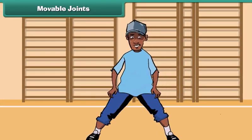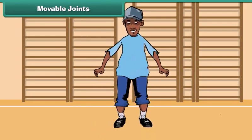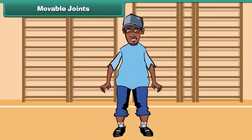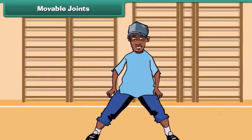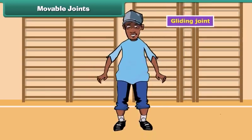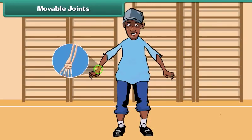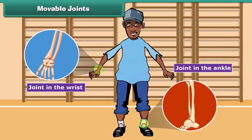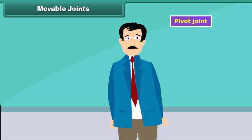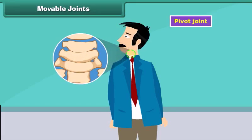Friends, have you ever noticed that we can move our hands and feet in different ways? The joints which allow such movements are called gliding joints. Joints in the wrist and the ankle are examples of these joints. Pivot joint: our neck allows us to turn our head on both sides. This is possible because of the pivot joint.